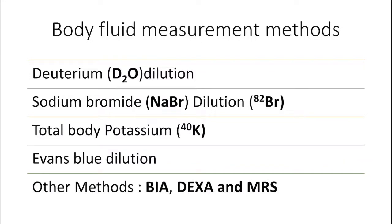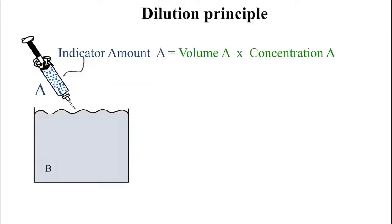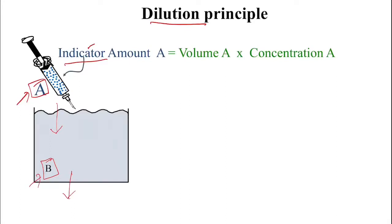Hello students, today we are going to discuss some of the methods used in the estimation of the volume of the body fluid compartments. Let's start with the common principle behind it — it's called the dilution principle or indicator dilution principle. We are going to inject a known quantity of a substance, an indicator or a dye, into the unknown compartment whose volume we want to measure, and then take a sample after equilibrium to find the final concentration achieved, and use these values to calculate the volume of the compartment.